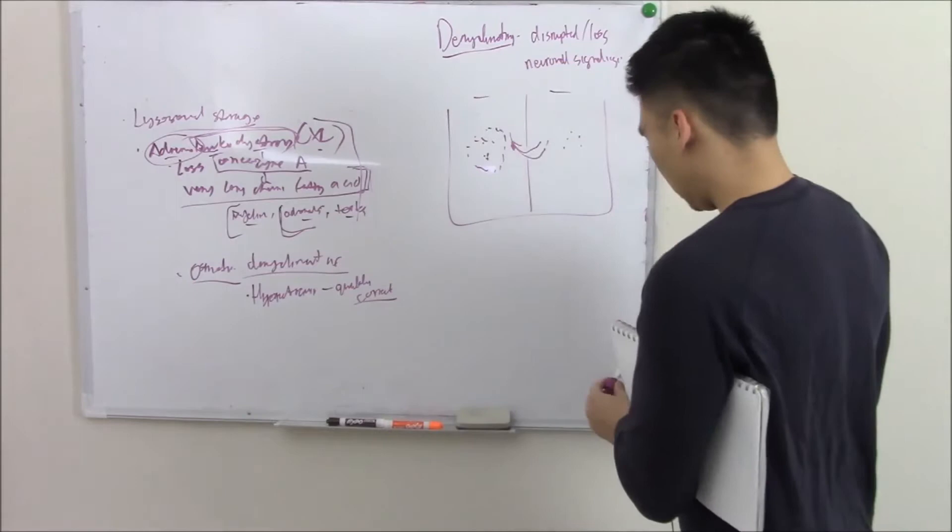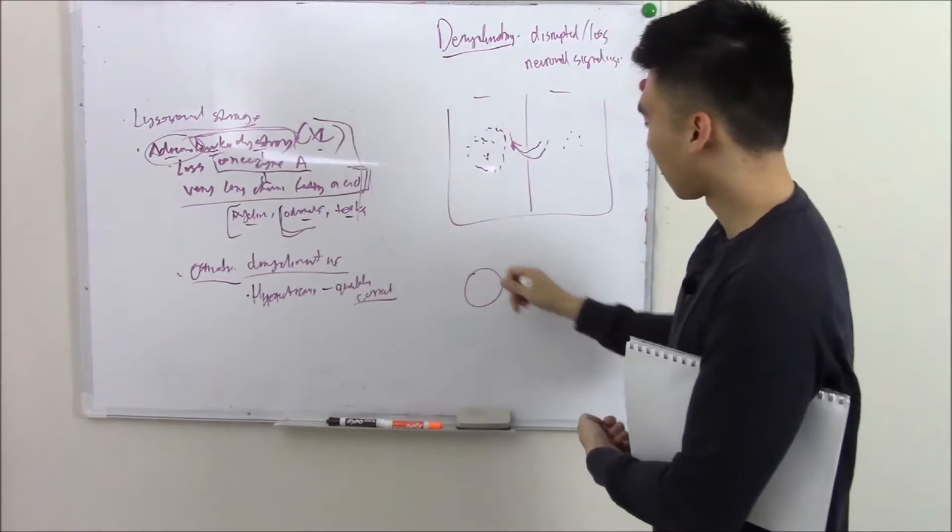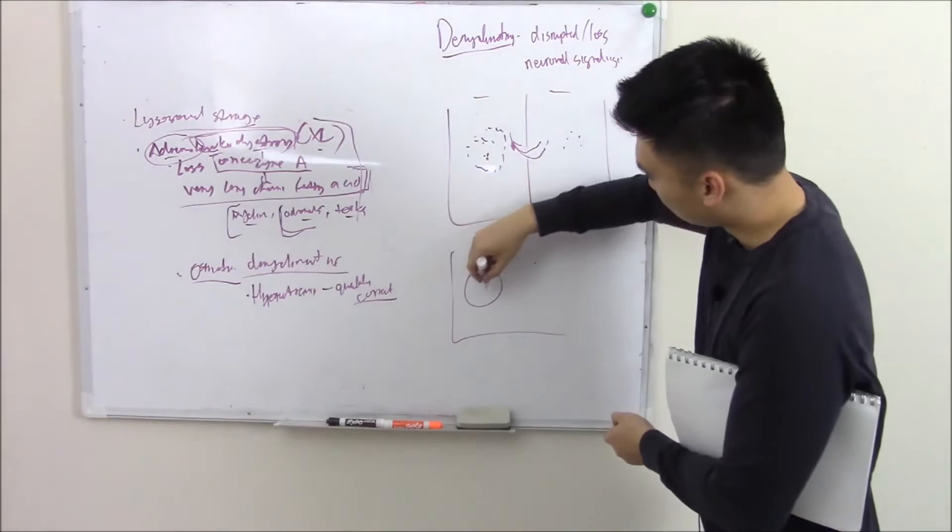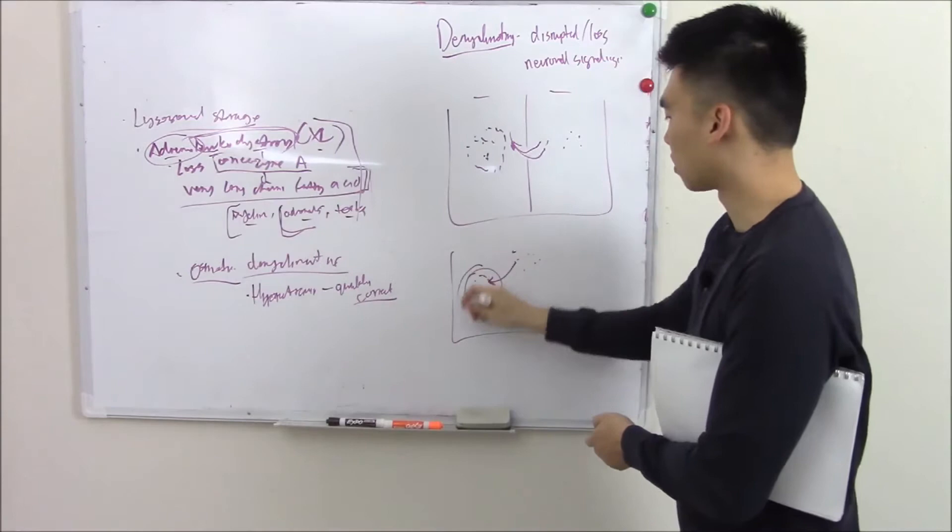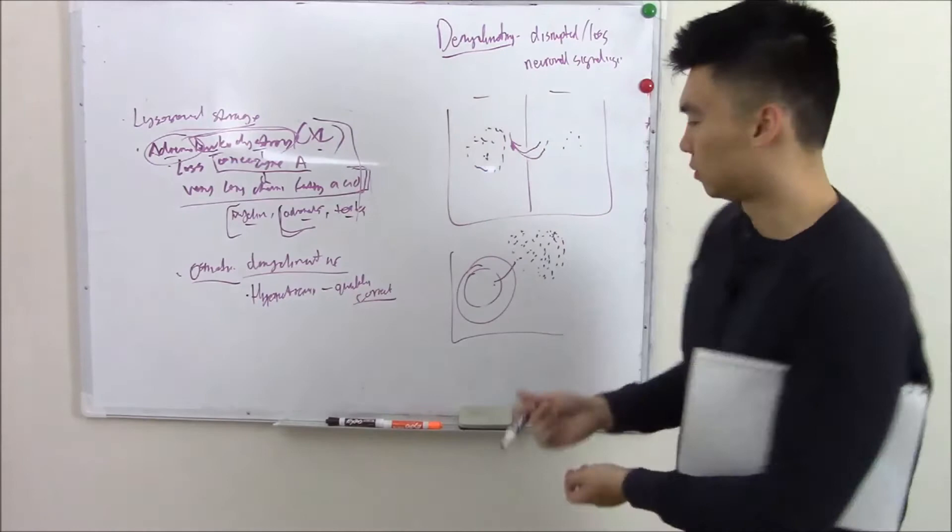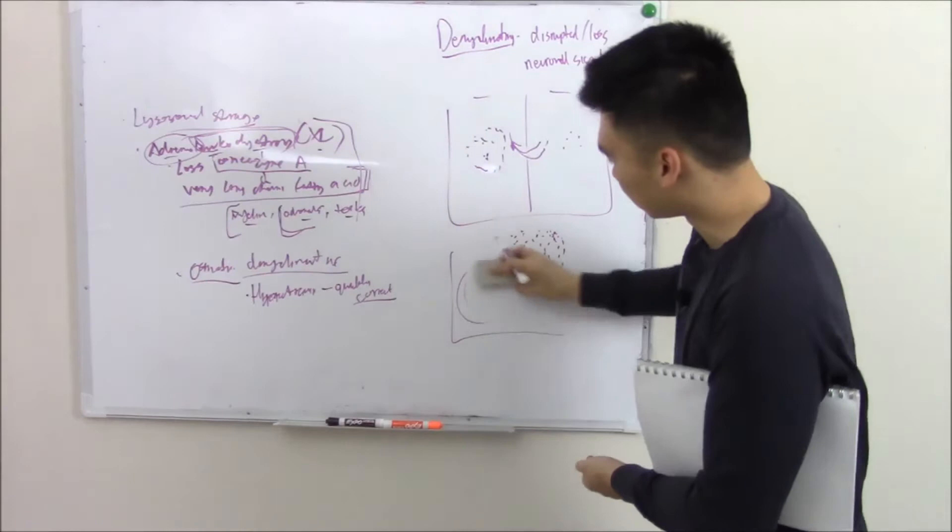So why does fixing hyponatremia cause osmotic demyelination? If you have your cell and you're hyponatremic, which means there's not a lot of sodium outside, then water will go into your cell, so your cell will swell up. If you quickly correct the hyponatremia and add solute to the outside fluid, then water will want to go where there's more solutes. It'll leave the cell so fast that your cells will die.